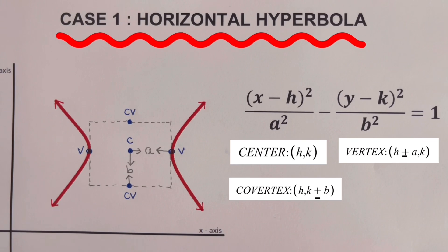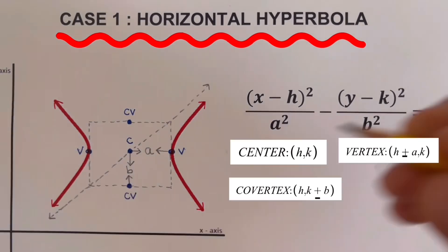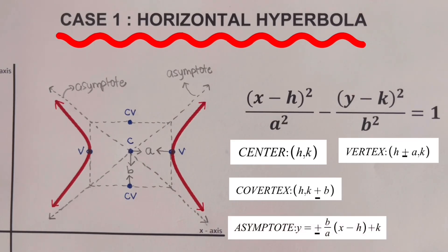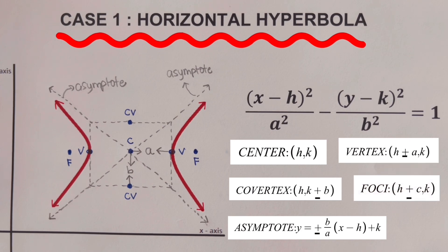The asymptotes of the horizontal hyperbola pass through the corners of the rectangle and through the center. The equation of these two asymptotes is Y equals plus or minus B over A, quantity X minus H, plus K. We also have the focus, and the coordinates of the two foci would be H plus or minus C, comma K.